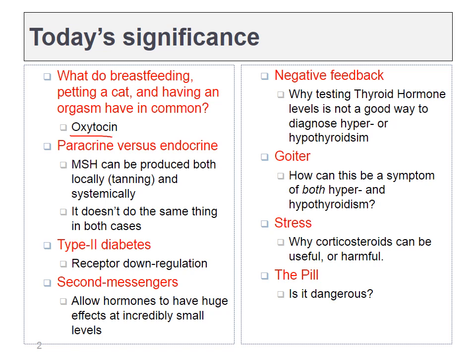We're going to talk about the difference between paracrine and endocrine signaling. We've already discussed a couple examples of paracrine signaling, such as tanning and inflammation, so today you need to understand why that's different from endocrine signaling and why we care. We'll talk about type 2 diabetes, and the major concept today will be receptor down regulation, which is common to a lot of other conditions besides type 2 diabetes.